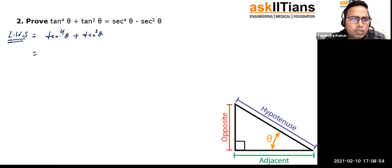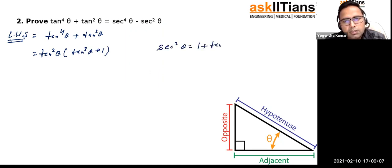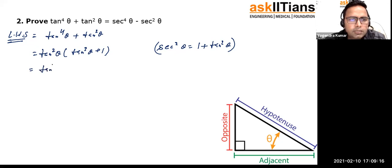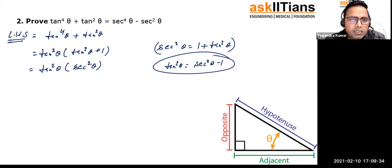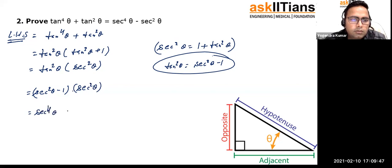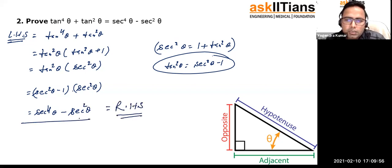I can see something is common, so factoring out tan²θ gives: tan²θ(tan²θ + 1). Using the identity sec²θ = 1 + tan²θ, I replace (tan²θ + 1) with sec²θ, giving: tan²θ · sec²θ. Now tan²θ = sec²θ − 1, so substituting: (sec²θ − 1) · sec²θ = sec⁴θ − sec²θ, which is the RHS.